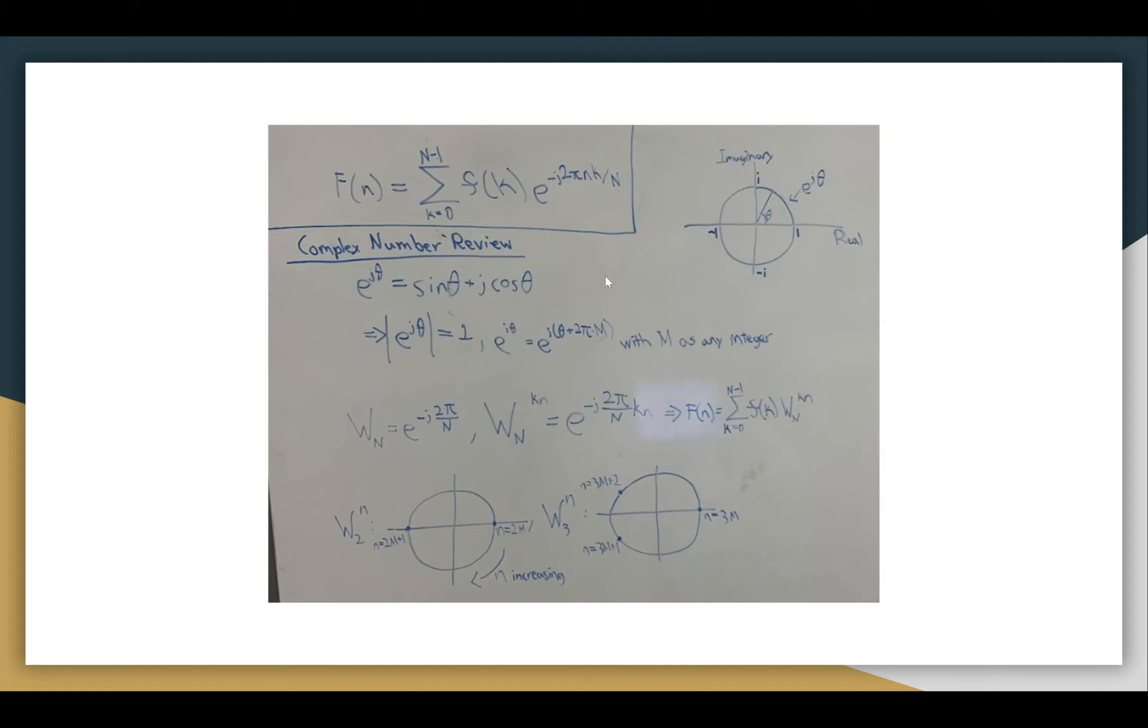To get into the fast Fourier transform, we need to do just a bit of complex number review. This is our formula, just rewritten here. Any complex number with a magnitude of 1 can be written as e to the power of j theta, where j is the square root of negative 1. And e to the j theta equals sine theta plus j cosine theta. The magnitude is 1, and it's periodic with period 2 pi, just like sine and cosine always are. We can see what e to the j theta looks like here. It just traces out a unit circle counterclockwise as theta increases. We're still using capital N for a period, and I'm using capital M to describe any generic integer.